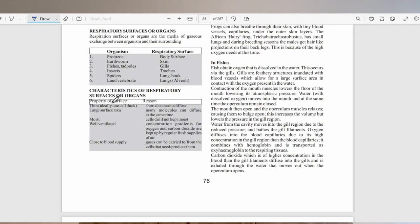Different organisms have different respiratory surfaces. For example, in protozoa, they make use of the entire body surface. In earthworm, they also use the skin. Fishes and tadpole make use of the gill. Insects use the structure called the trachea. For spiders, they develop a structure called the lung book. It is a special kind of trachea system.